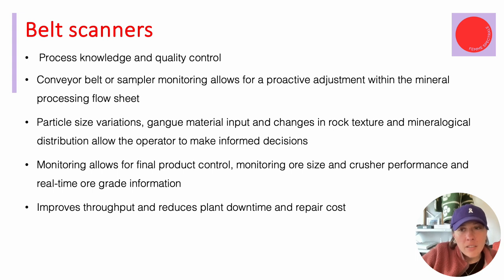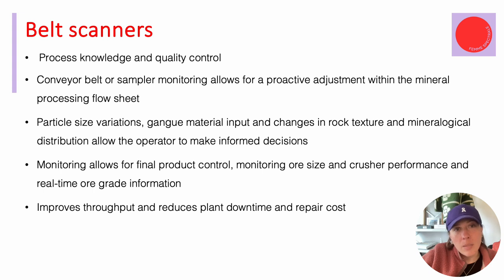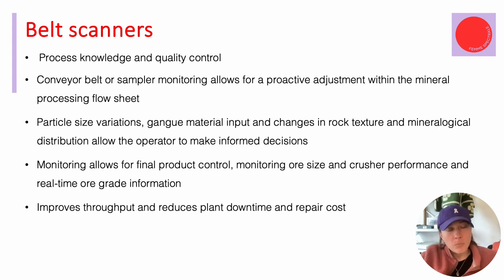There's a difference between belt and core scanners. Belt scanners are more for a sorting perspective — scanning material on a conveyor belt coming from or going to a crusher. They can help with sampling, proactive adjustment for mineral processing, figuring out particle size variation, gangue material, and penalty minerals. They can also help with final product control on a product conveyor going to stockpiles — all applicable if the material being scanned is spectrally active.